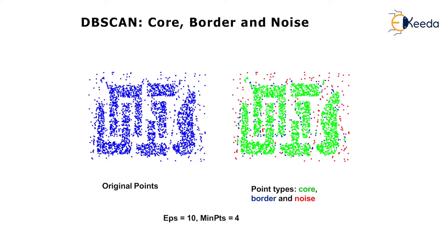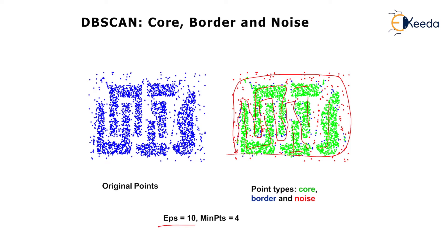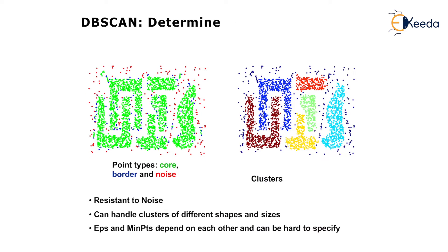Looking at the original data points: core values are those very close together, border points are at the edge, and points shown in red are noise — not related to any cluster. With eps equal to 10 and minimum points equal to 4, we can determine point types. Clusters of different shapes and sizes can be formed — here we have six clusters and the rest are noise.